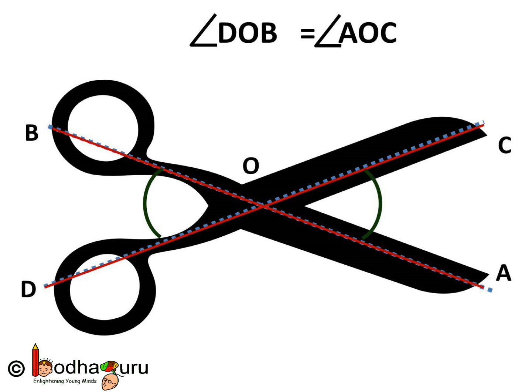Angle DOB is equal to angle AOC. These two are vertically opposite angles. So now you would understand and appreciate that why when angle DOB increases, angle AOC also increases and vice versa.